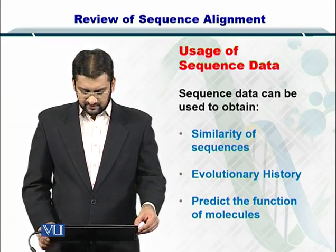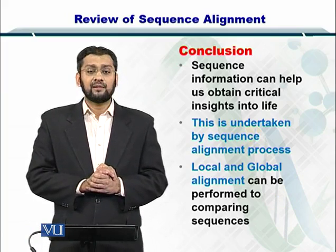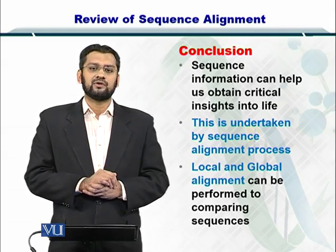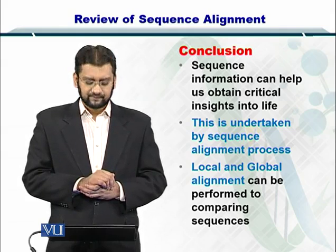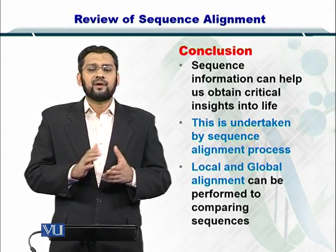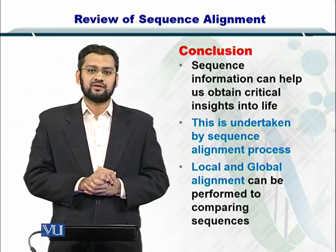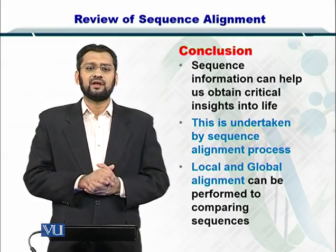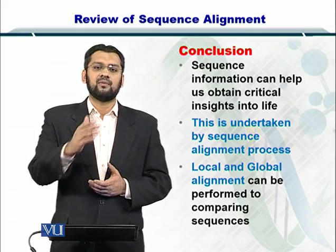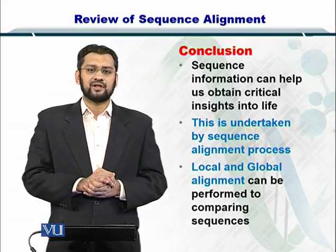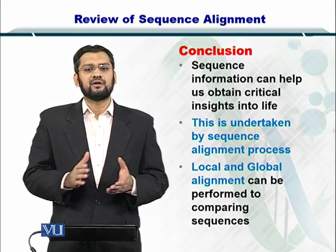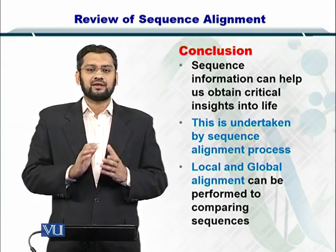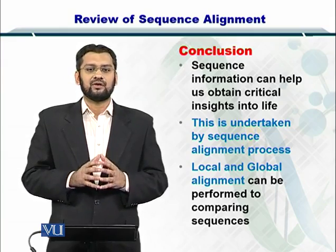In conclusion, sequence information can help us obtain critical insights into biological systems and we can draw very useful conclusions from it. This process is called sequence alignment, in which we compare sequences. Sequence alignment comprises local and global alignment, and there are several algorithms available in the form of online portals for ease of utilization. Once local or global alignment is done and the comparison is performed between sequences, it can help you look at the function of these molecules as well.